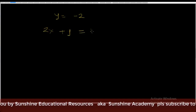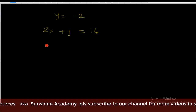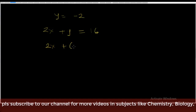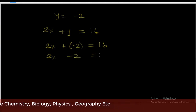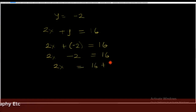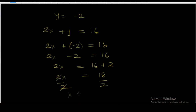Now let's substitute y equals minus 2 into equation 1: 2x plus y equals 16. So we have 2x plus minus 2 equals 16, which is 2x minus 2 equals 16. Taking the 2 to the other side, 2x equals 16 plus 2, so 2x equals 18. Dividing both sides by 2, x equals 9. So y equals minus 2 and x equals 9.